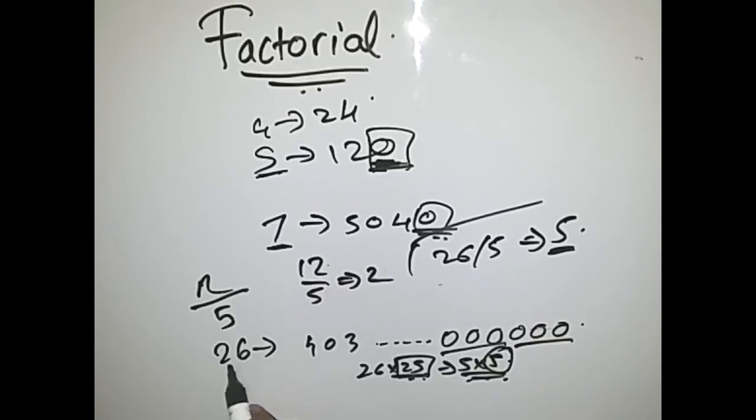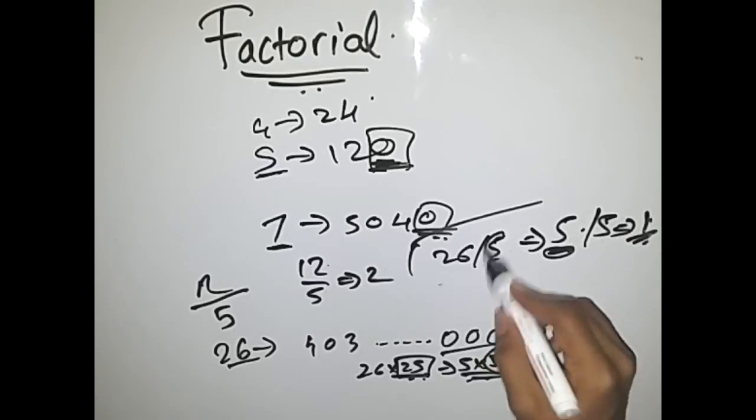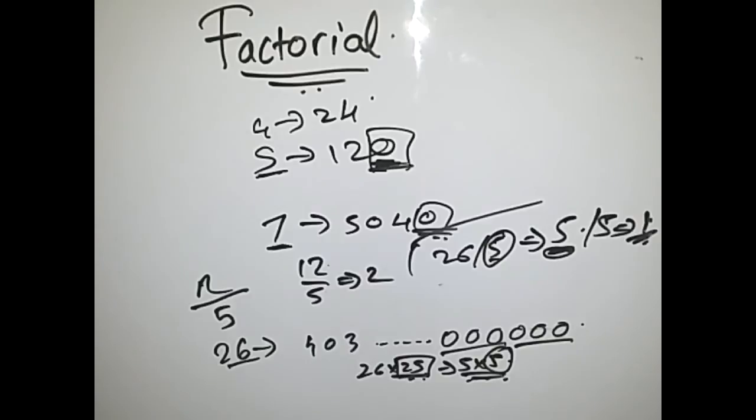So what we have to do is: 26 divided by 5 is 5, then if this 5 is greater than or equal to 5, we again divide it by 5 which gives 1, and then add this 1 to what we originally got. This is the logic of the problem.